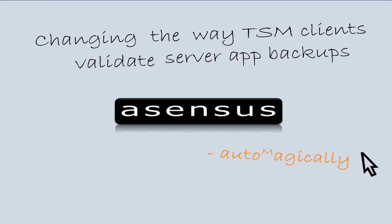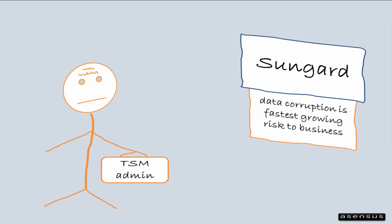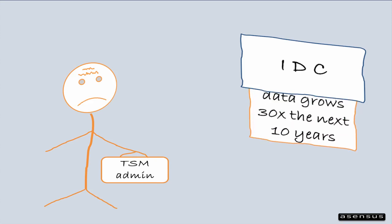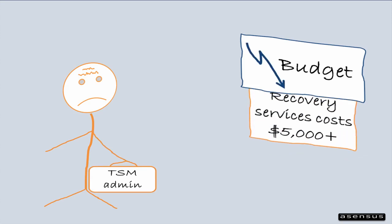Ascensus software is all about trusting server backups. Critical databases and backups sometimes corrupt. To make things worse, more than a third of us never do any restart testing. To add to this, humongous data growth 30 times over the next decade. Fact is, many of you have lost data, but shrinking budgets and tedious manual testing won't get us far.